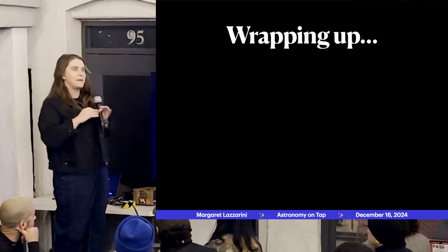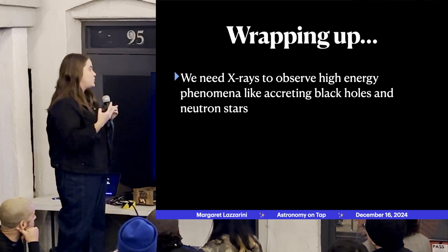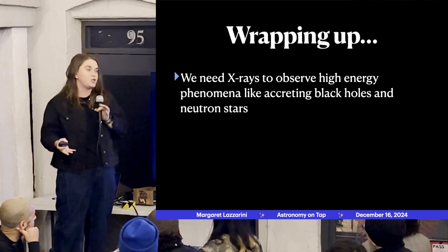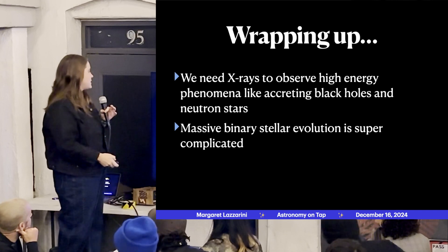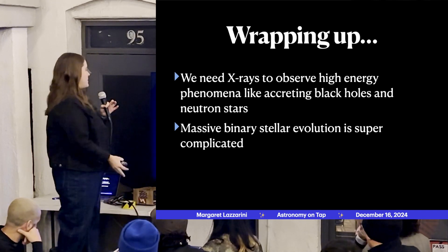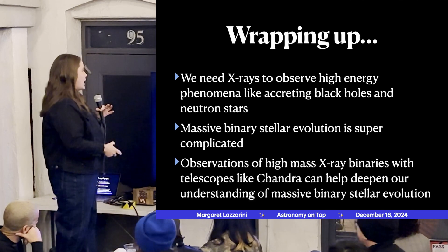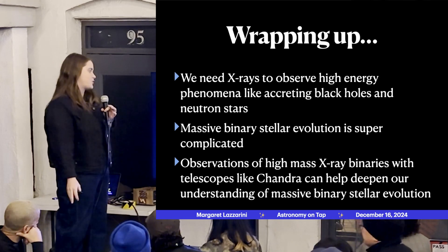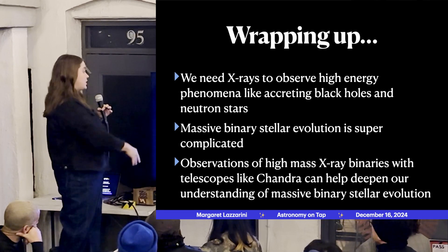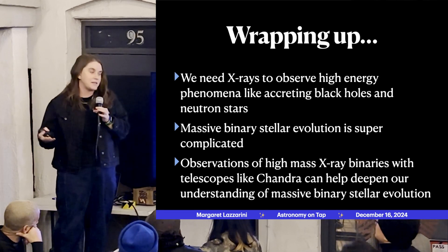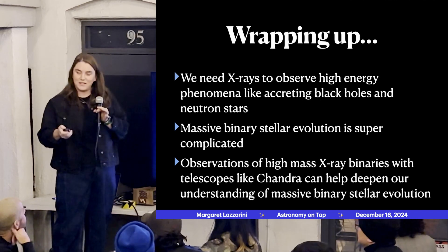To wrap up: we need X-rays to observe high-energy phenomena like black holes and neutron stars, because those objects emit most of their light at X-ray wavelengths. Massive binary stars are fascinating and their evolution is super complicated — we're still figuring it out. Observations of high-mass X-ray binaries with telescopes like Chandra can deepen our understanding of massive binary stellar evolution. Thank you all so much for listening.